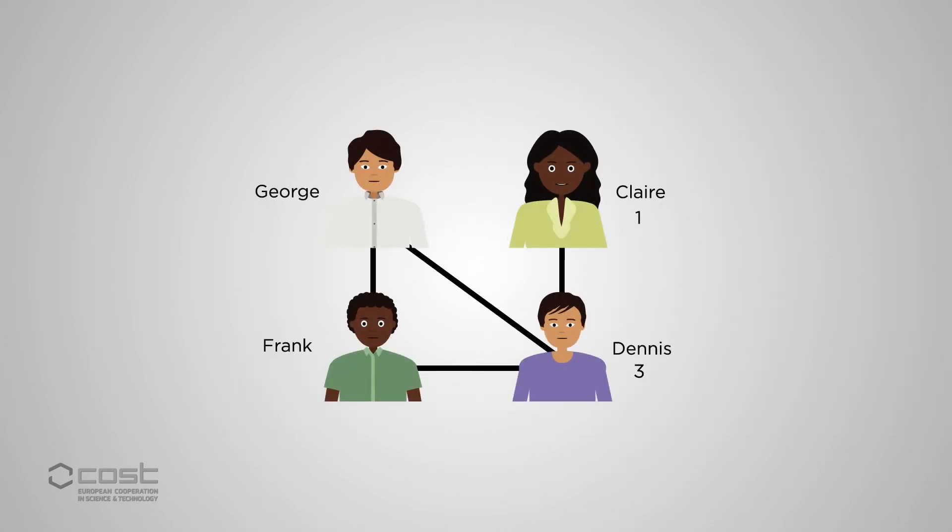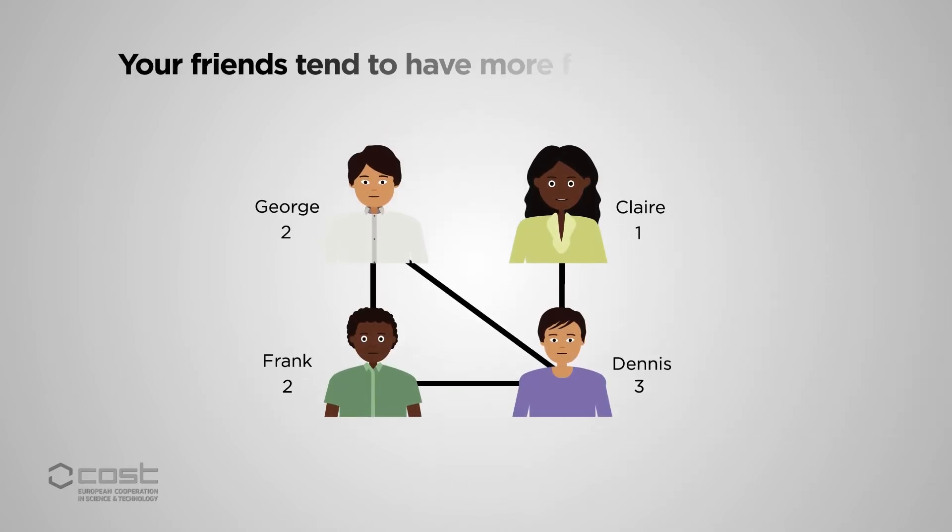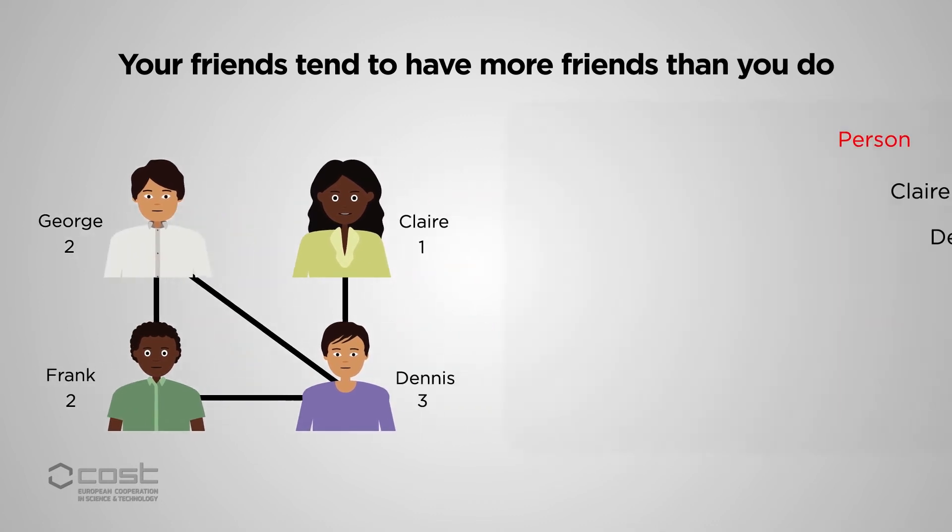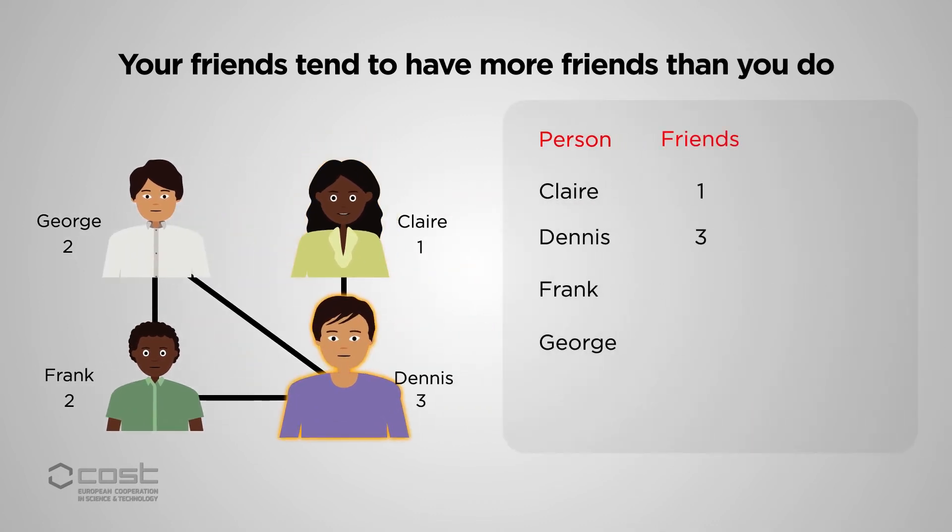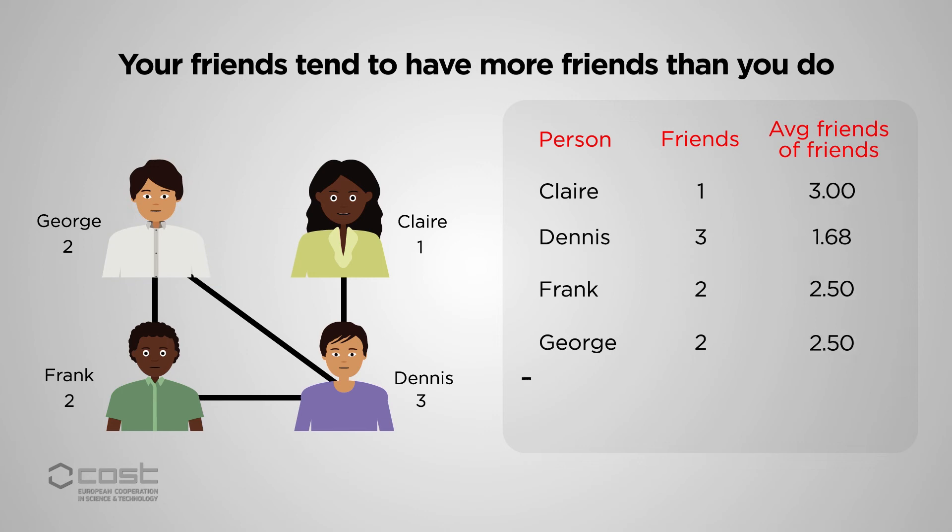The friendship paradox says that on average, your friends have more friends than you do. This is because if we pick a random person and ask them to name a friend, they're more likely to name someone who knows lots of people, rather than someone who only knows one or two people.